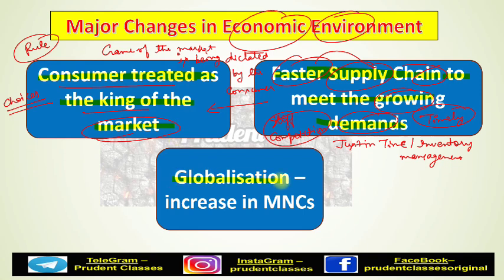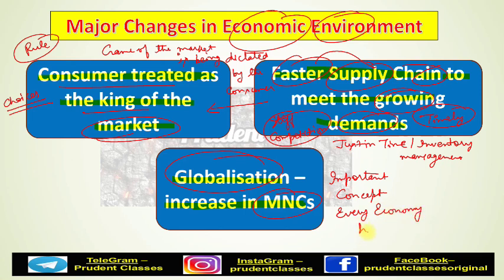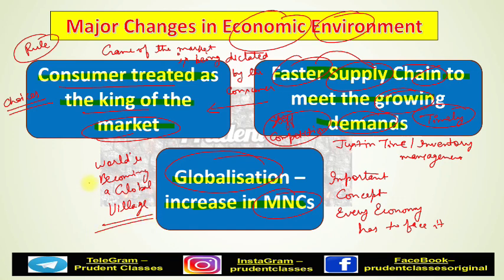The last major change we will discuss is globalization. Previously, globalization was not this prominent, but today the role of multinational corporations is growing significantly. Globalization has become a very important concept and every economy has to face it. The world is becoming a global village — any organization can do business in any part of the world. Due to this, competition is also increasing further. This was the reason why MNC concepts grew. These were the major changes in the economic environment.